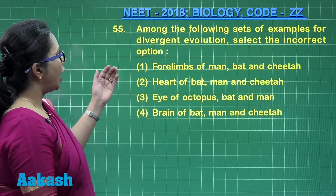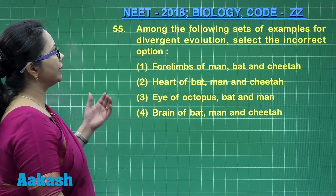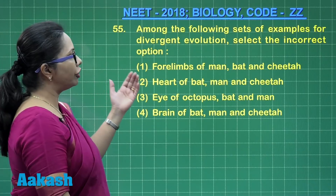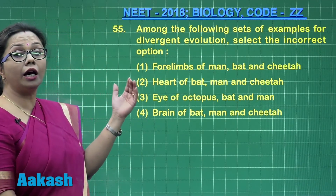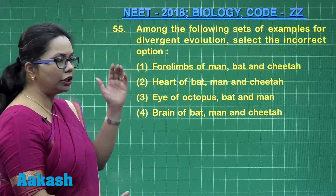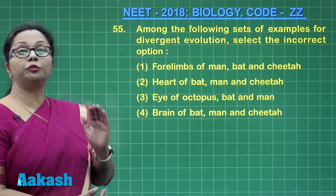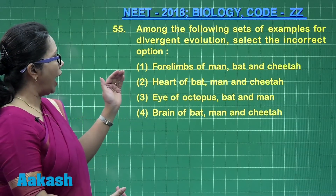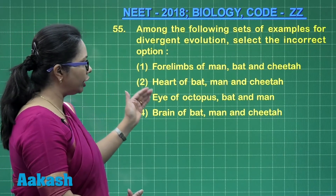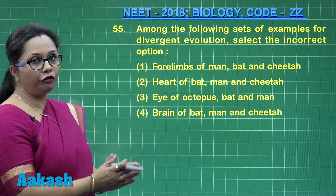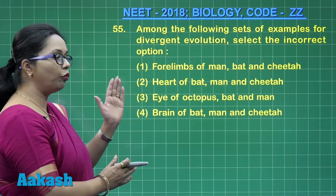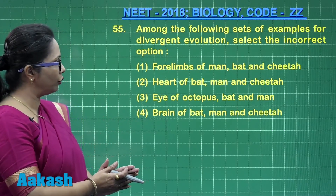Question 55: Among the following sets of examples for divergent evolution, select the incorrect option. Divergent evolution is based on homology, and here there will be three options in which homologous structures are mentioned and one will be the odd one out.